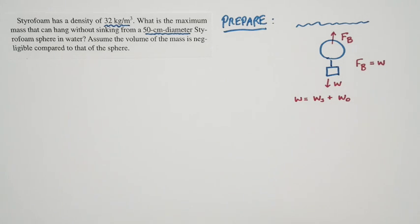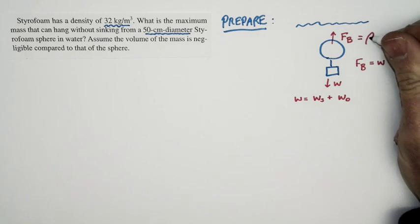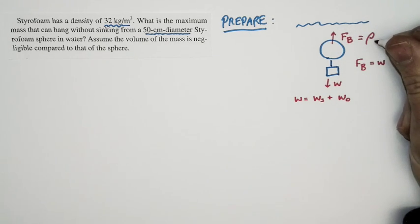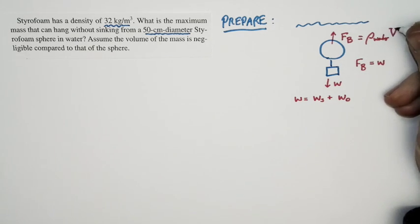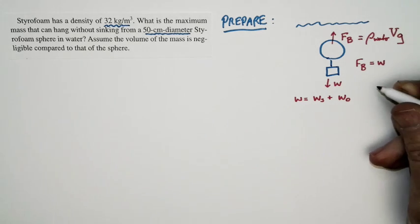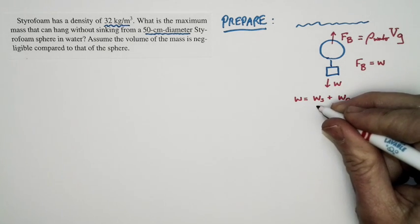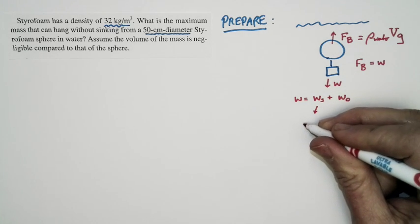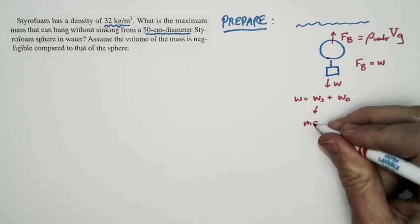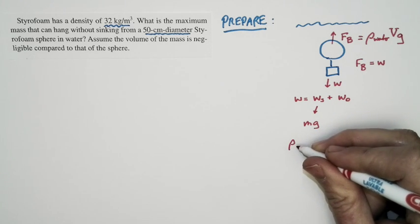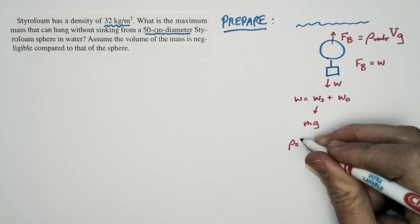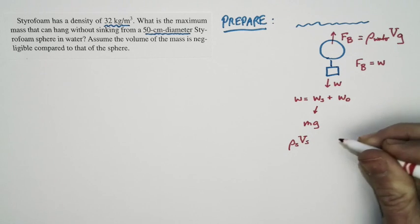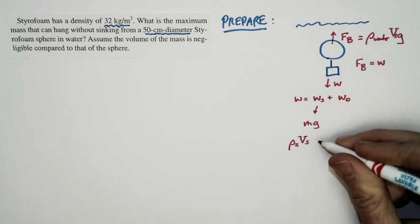Let's do some more things to prepare. Now the buoyant force we know is this. Buoyant force is equal to the density of the fluid, which is just the density of water, times the volume displaced. Well, that's just the volume of the styrofoam sphere times G. The weight of the styrofoam sphere is just going to be equal to the mass of the sphere times G. Well, the mass of the sphere is the density of the sphere times the volume of the sphere. We'll let Vs be the volume of the sphere.